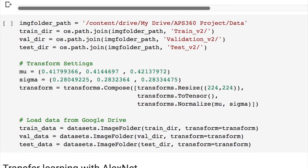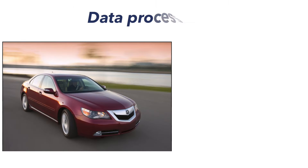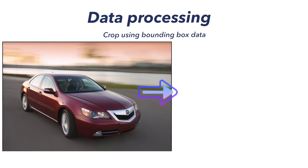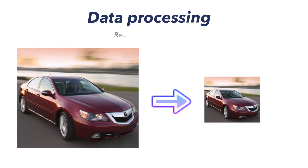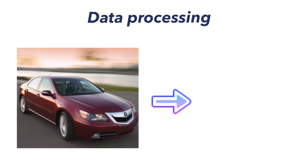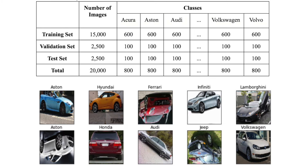As a result, all the classes have the same number of images. Data normalization is also performed for better performance. Additionally, each image was cropped to the smallest square that still contains the full car body, based on the bounding boxes provided in the dataset, and then resized. The data was then split into 75% train, 12.5% validation, and 12.5% test.